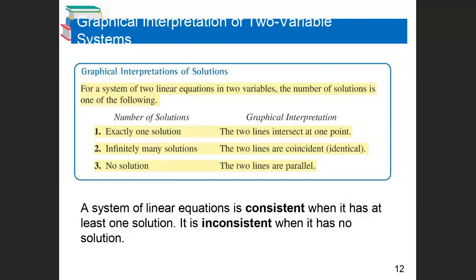When solving two systems of equations: if you have exactly one solution, the two lines intersect at one point. If you have infinitely many solutions, the lines are coincidental — meaning identical. No solutions means the lines are parallel. A system of linear equations is consistent when it has at least one solution — one solution or infinitely many. It is inconsistent when it has no solutions, which means the lines are parallel.